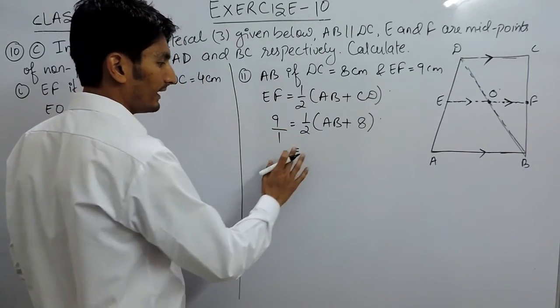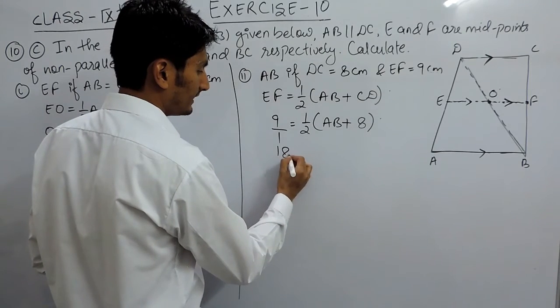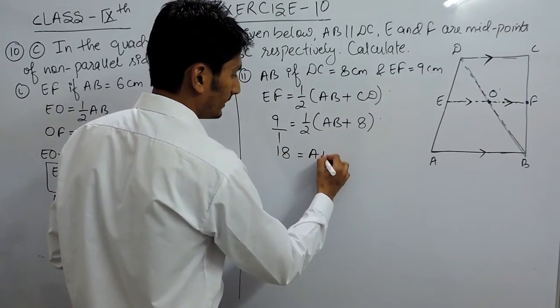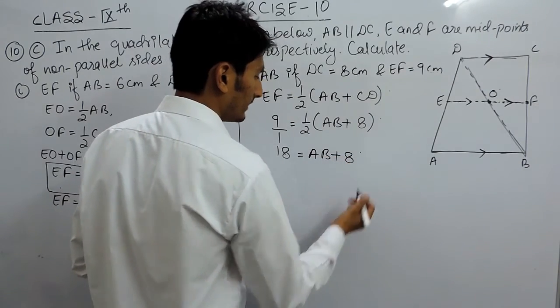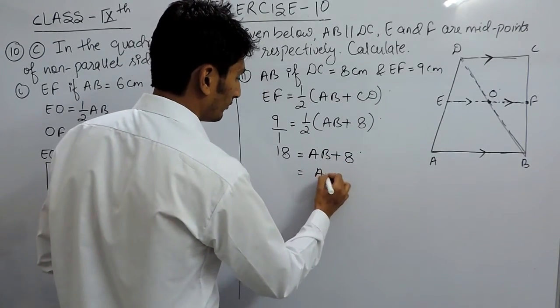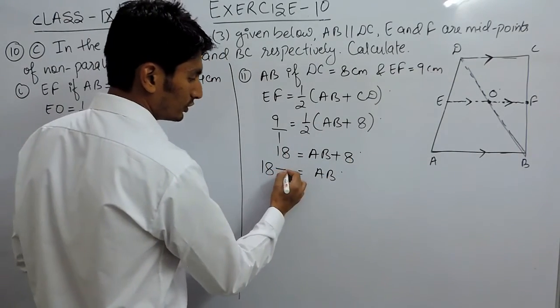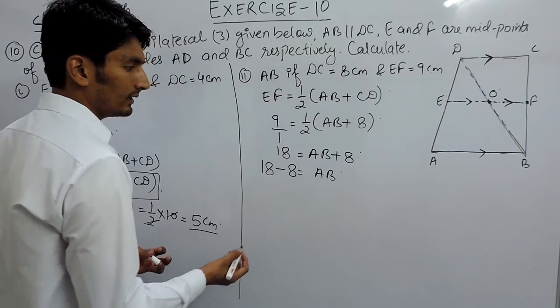To solve this, we can cross-multiply. 2 multiplied with 9 will be 18, and 1 multiplied with AB plus 8 will be AB plus 8. The value of AB will be 18. This positive term when shifted to this side should be minus 8.